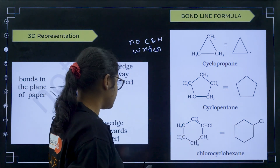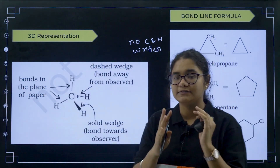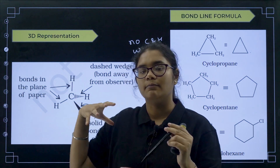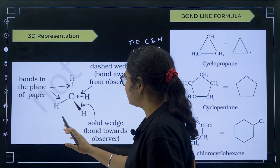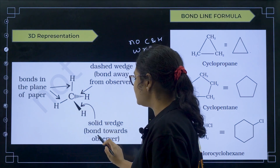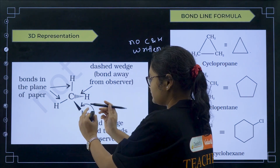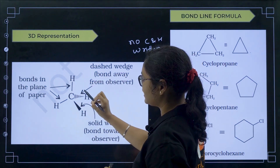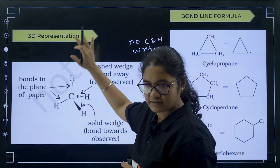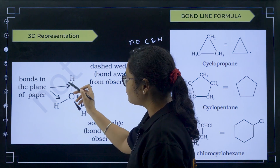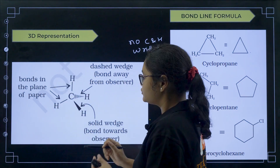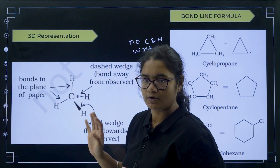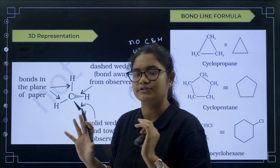Next we have 3D representation of carbon. Carbon has four bonds — two bonds are in one plane, one bond is towards you, and one bond is away from you. This wedge line represents a bond towards the observer — meaning the bond is coming towards me. The dash bond represents a bond away from the observer — meaning the bond is going inside the blackboard, away from me. The two remaining bonds are in the plane of the board. That is the 3D representation of carbon compounds.